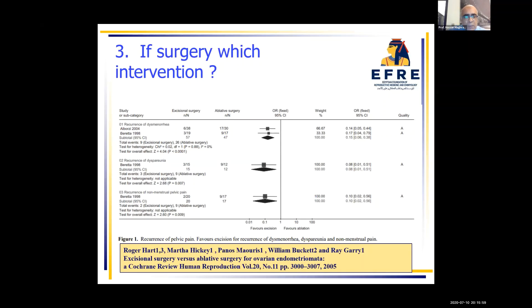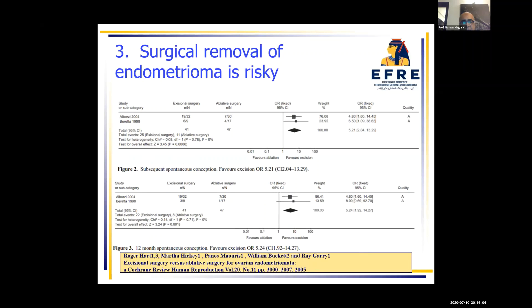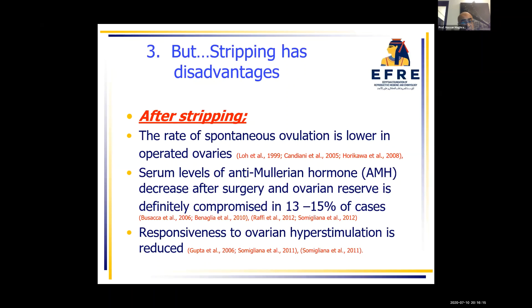All outcomes — pain and pregnancy — are better with the stripping of the cyst wall. Ablation results in more pain, more recurrence, and less pregnancy. But after stripping, the rate of spontaneous ovulation is lower in the ovary. Ovarian reserve decreases and responsiveness to ovarian hyperstimulation during ICSI is also reduced. So if you want surgery, you have to do extirpation of the wall, but if you do extirpation of the wall, then you will end up with problems.